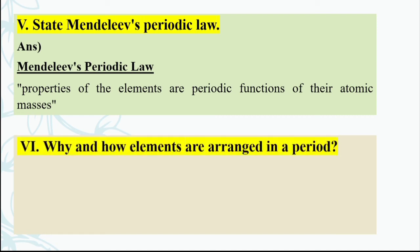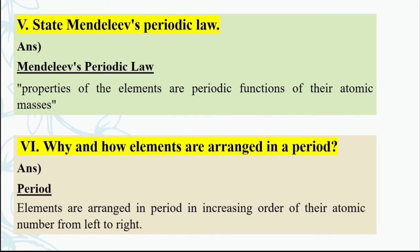The next question is: Why and how are elements arranged in a period? Elements are arranged in a period in increasing order of their atomic number from left to right. In the periodic table, moving left to right, the element with atomic number 1 is first, then atomic number 2, then 3, and so on — elements are arranged in increasing order 1, 2, 3, 4, 5, 6.